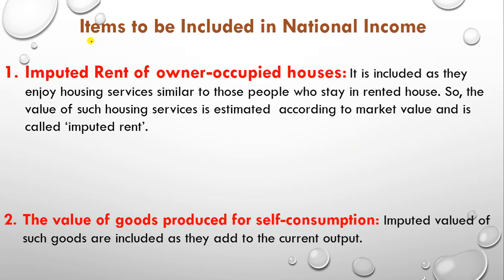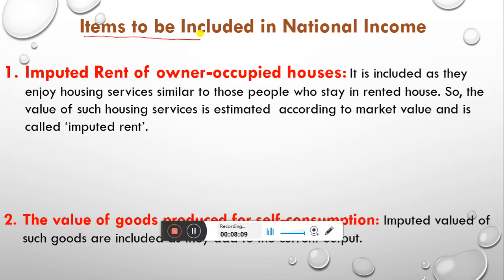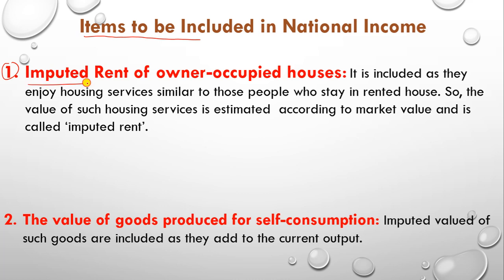Now let's recap the items to be included in national income. The imputed rent of owner-occupied houses means the owner is enjoying the same housing services as someone in a rented house, so the market value of those housing services is added. Goods produced for self-consumption are added because production occurred in the current year. Change in stock is part of capital formation, i.e., investment, which is added to national income. Brokerage or commission on sale of second-hand goods is a productive service and is added.